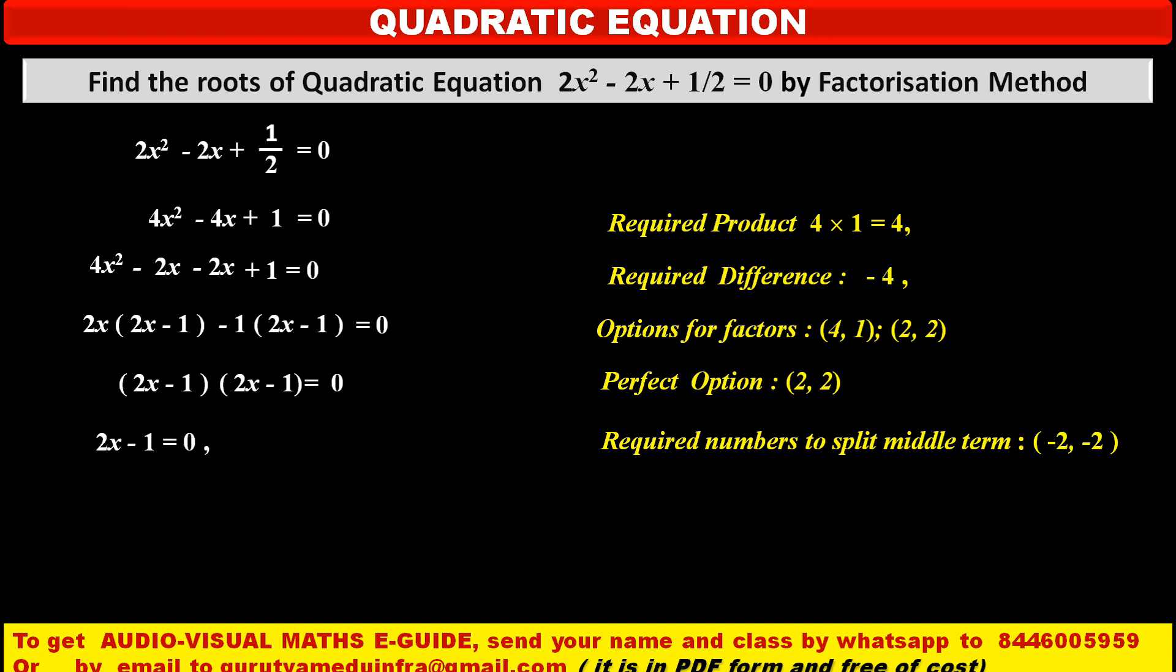That means, either (2x - 1) first bracket is equal to 0, or second bracket (2x - 1) is equal to 0. Both the brackets are same. Then, sure, we will get same roots, equal roots. So, that means, x = 1/2 or x = 1/2. And hence, we can say that given quadratic equation has equal roots 1/2.